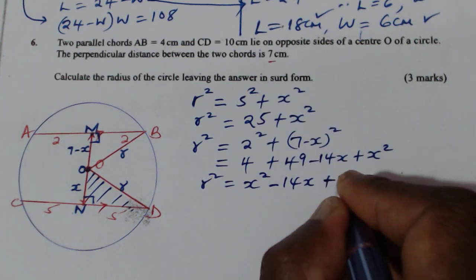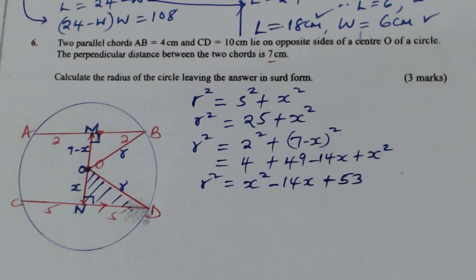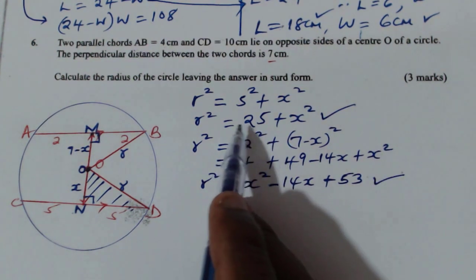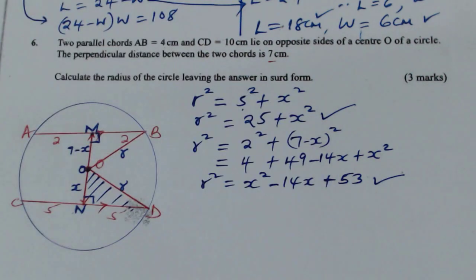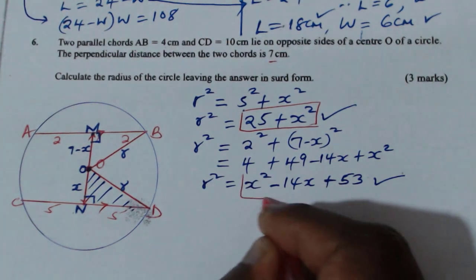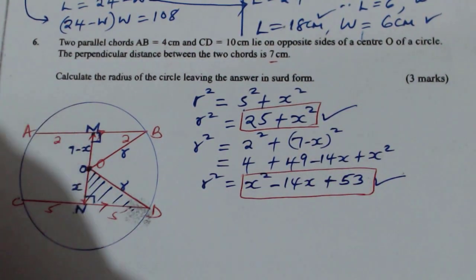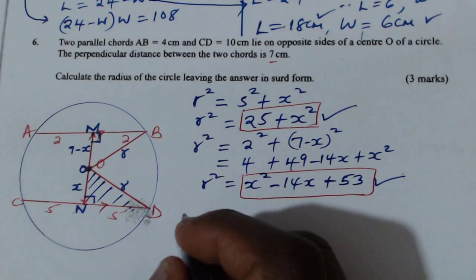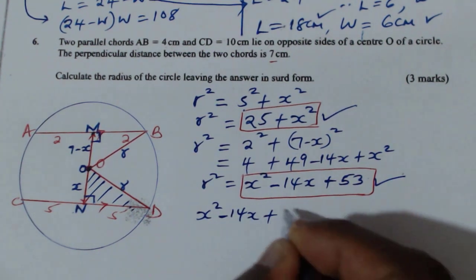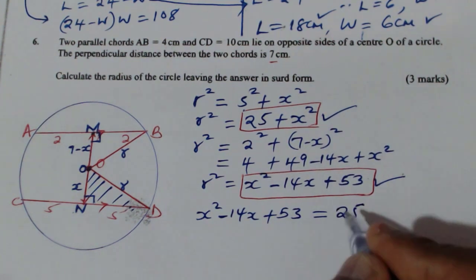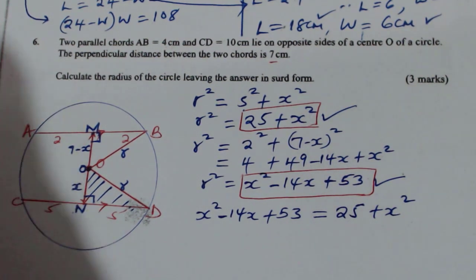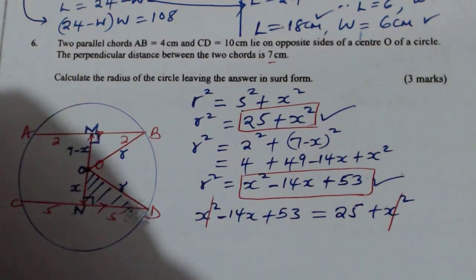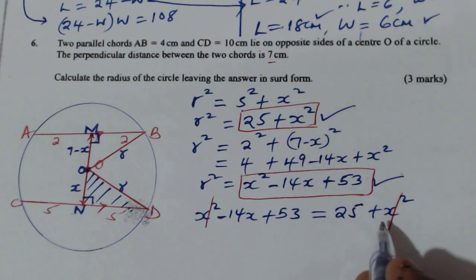Note that 49 plus 4 gives 53. Now we have two expressions for R squared. The first one is R squared equals 25 plus X squared, and the second is R squared equals X squared minus 14X plus 53. Since both express the same quantity, we equate them: X squared minus 14X plus 53 equals 25 plus X squared. The X squared terms cancel on both sides when subtracted.